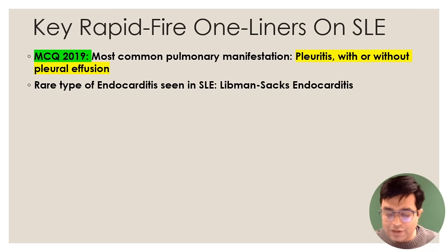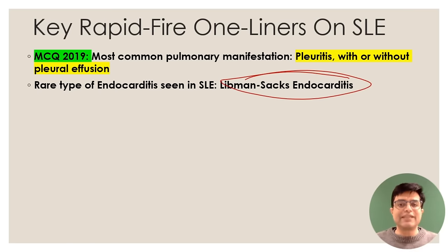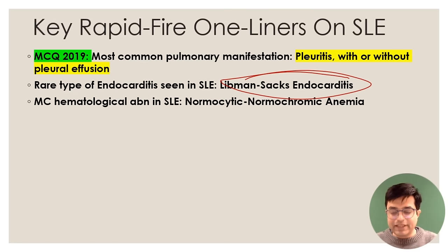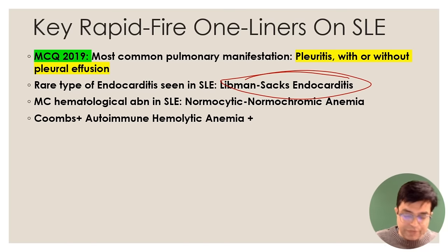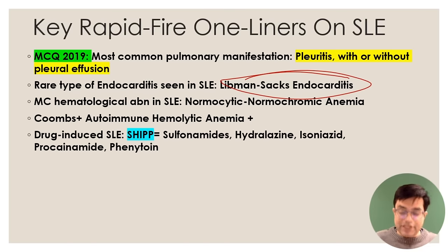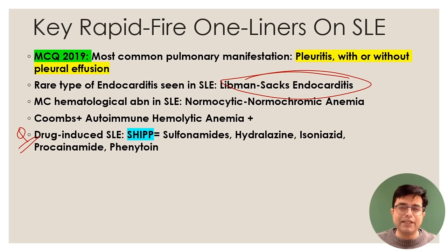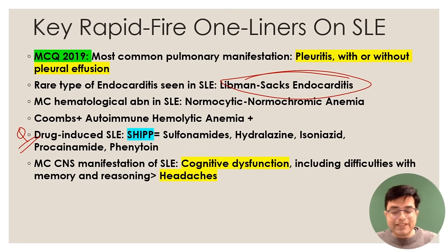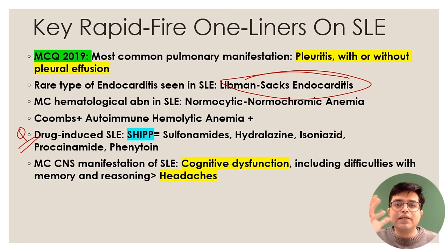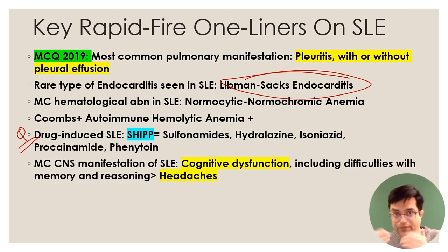Most common pulmonary manifestation is pleuritis. Rare but classic: Libman-Sacks endocarditis is described only in SLE. Most common hematological abnormality is normocytic normochromic anemia due to inflammation. Coombs-positive autoimmune hemolytic anemia can also occur. Drug-induced SLE mnemonic — SHIPP: Sulfonamide, Hydralazine, Isoniazid, Procainamide, Phenytoin. Most common CNS manifestation is cognitive dysfunction.